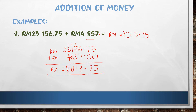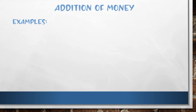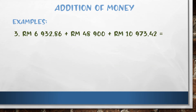When you write it, you must write RM only — do not write sen. But when you pronounce the money, you say: twenty-eight thousand and thirteen ringgit, seventy-five sen. Now we go to the third example, which is also an addition operation.